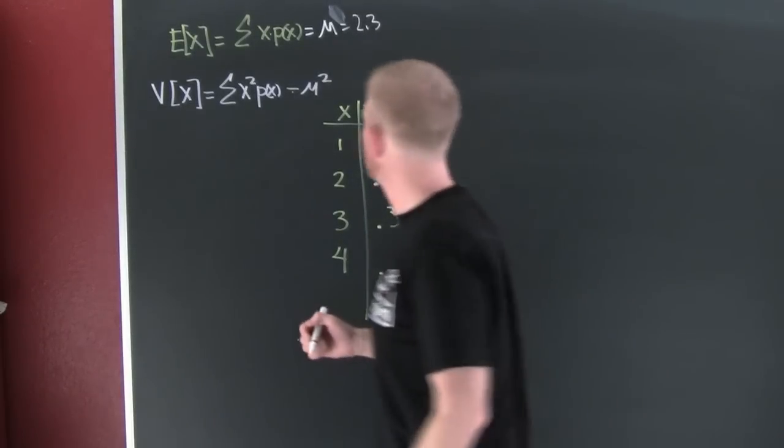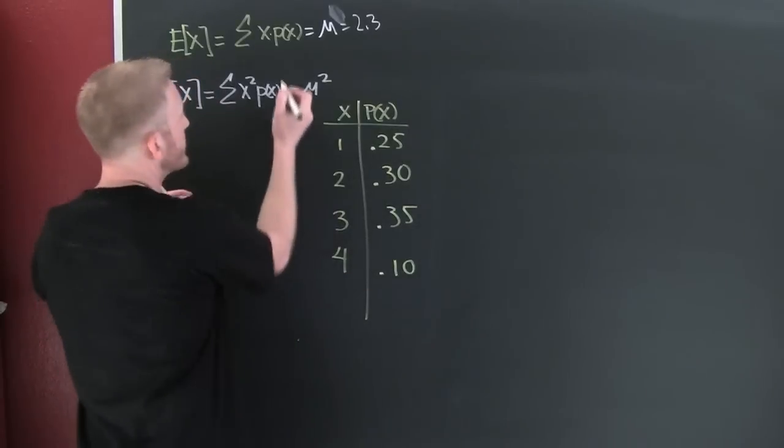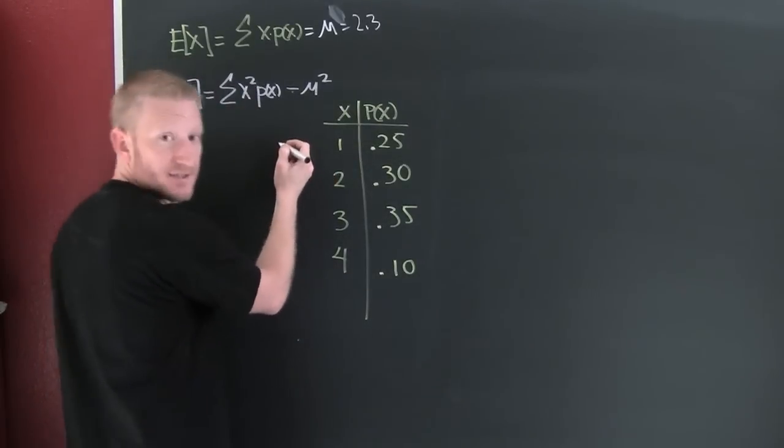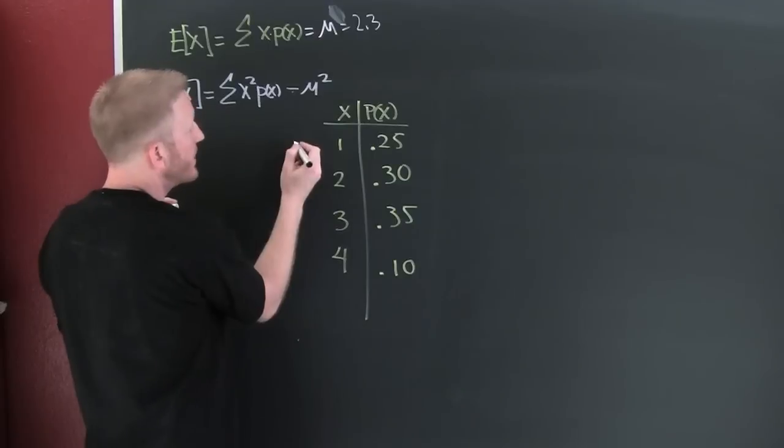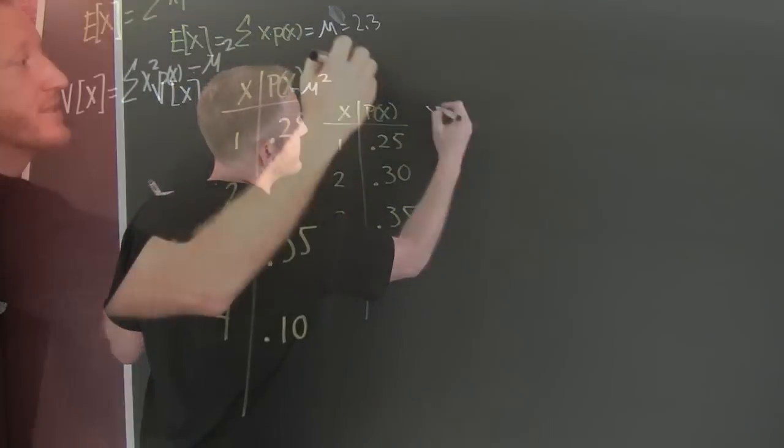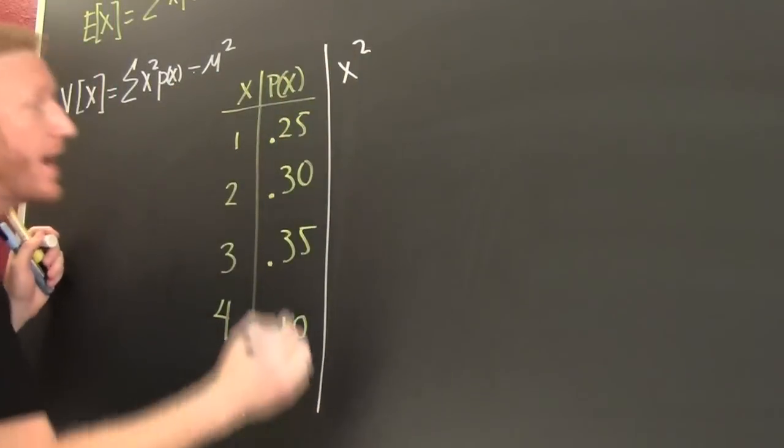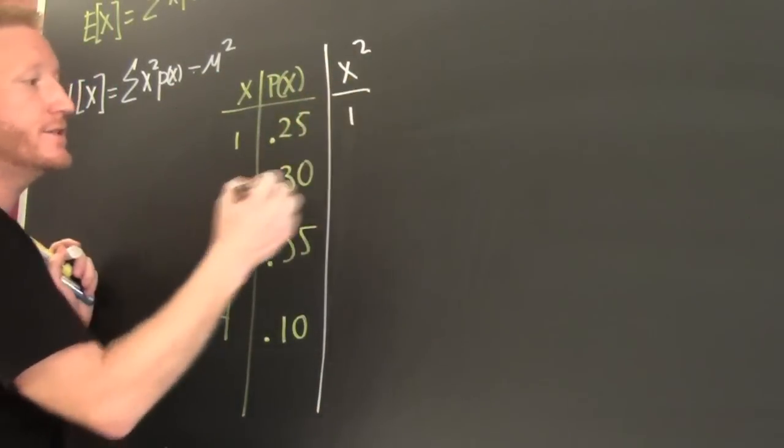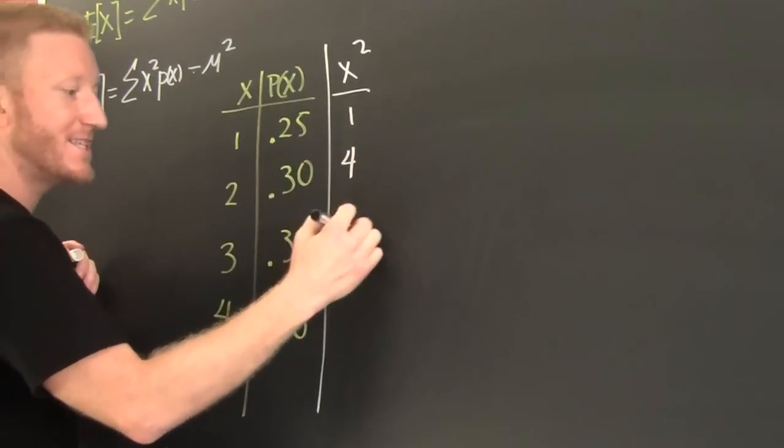I need to find the squares of these guys. Yes! That's my phone ringing again. Unprofessional. Yeah, the squares of these guys. 1 squared. Let's find x squared. 1 squared is 1. 2 squared is 4. 3 squared is 9.